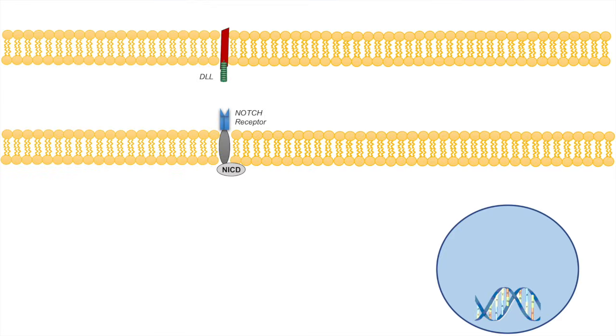The notch signaling pathway involves intercellular signaling interactions. Because this pathway involves intercellular signaling interactions, it requires two cells: one, a sending cell, and the other, a receiving cell. So what determines a sending cell and what determines a receiving cell?